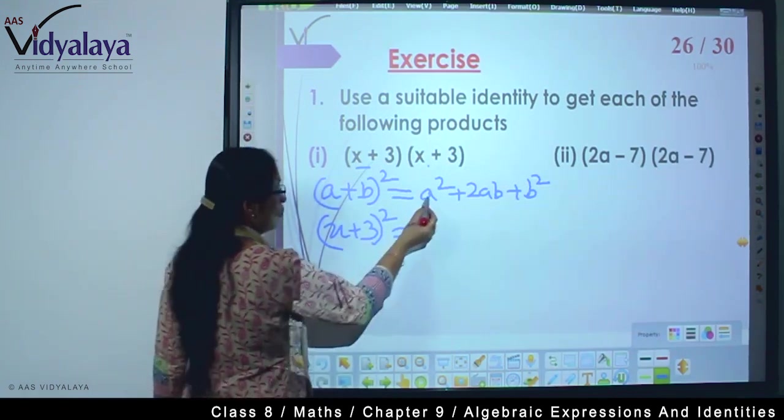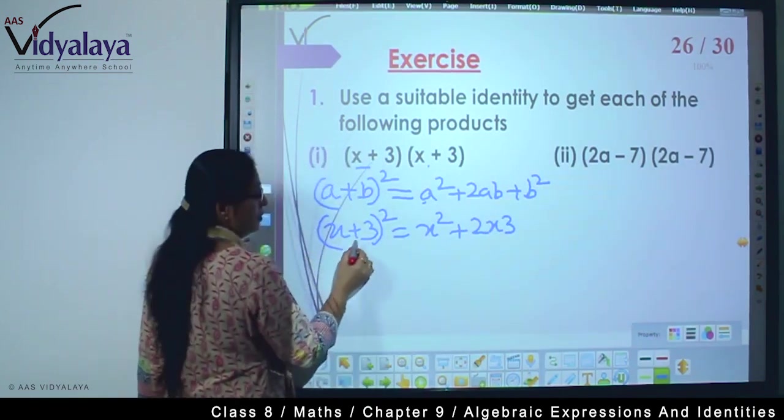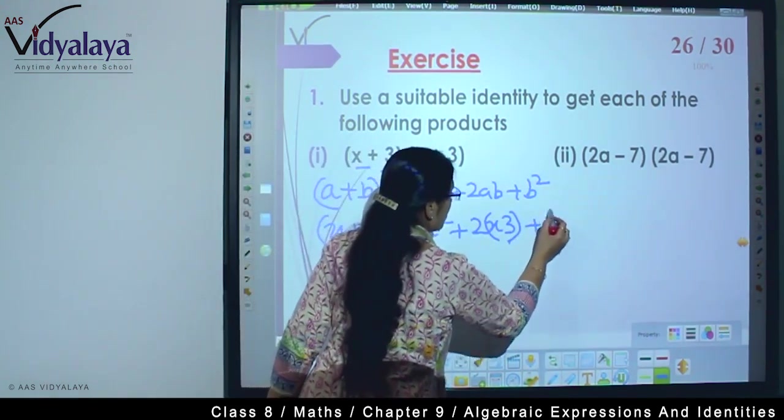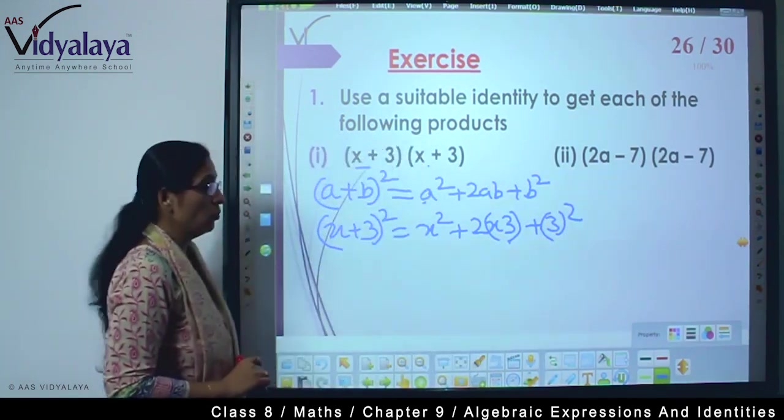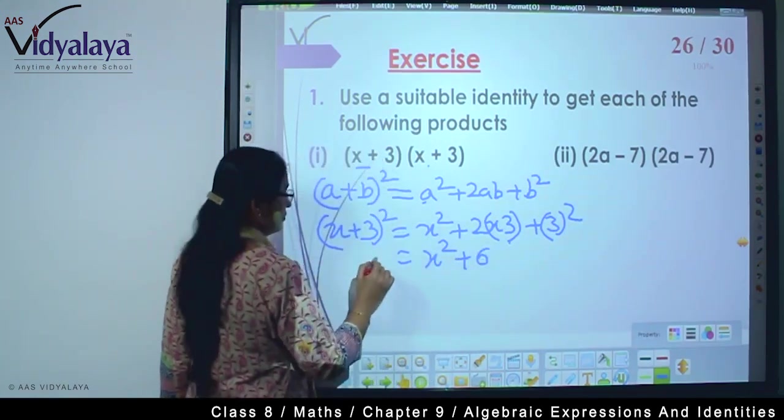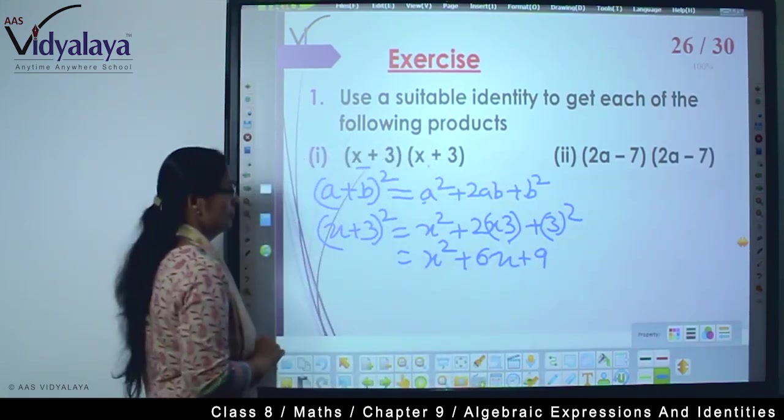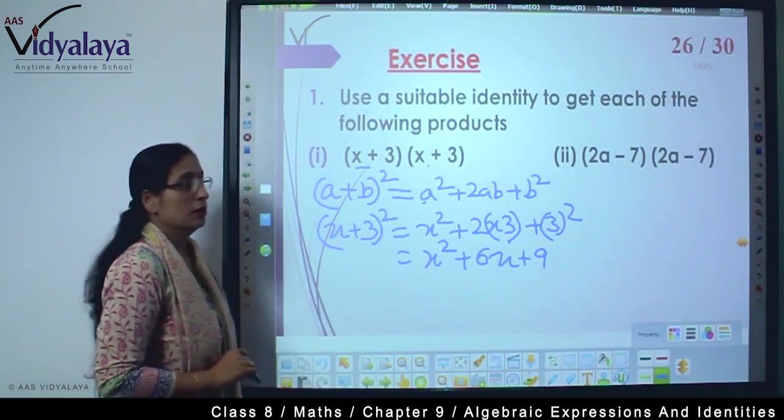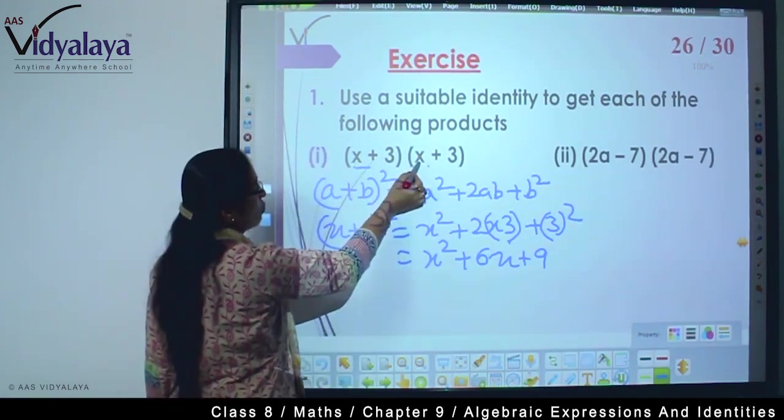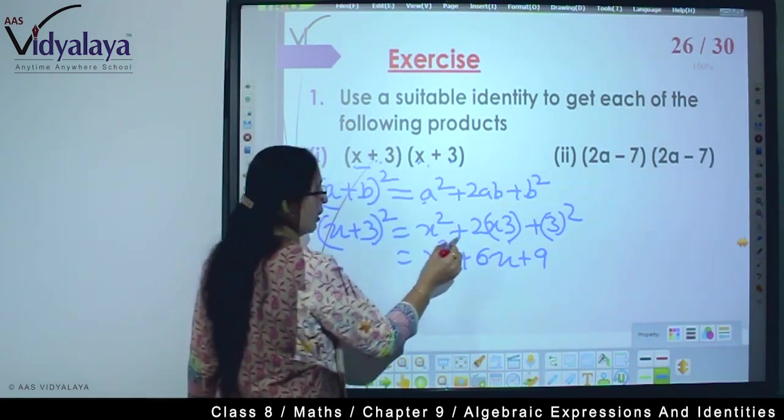Now solve this. a² means x², plus 2 times x times 3, which is 2x3, and then plus 3². So this means x² + 6x + 9.